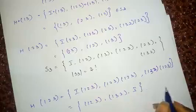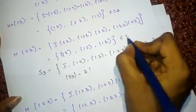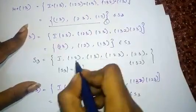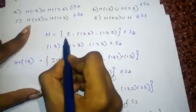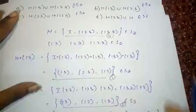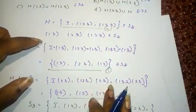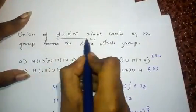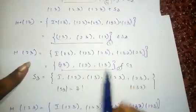So these results — (1 2 3), (1 3 2), and I — all belong to S3. Now I want to find which are all the disjoint right cosets. First I'll check H(1 3) and H(1 2 3).